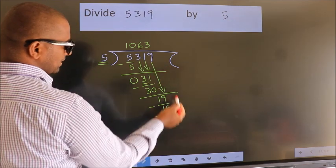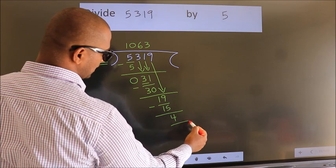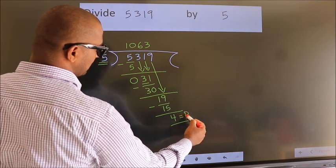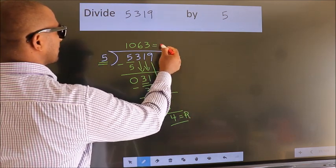No more numbers to bring it down. So, we stop here. This is our remainder. This is our quotient.